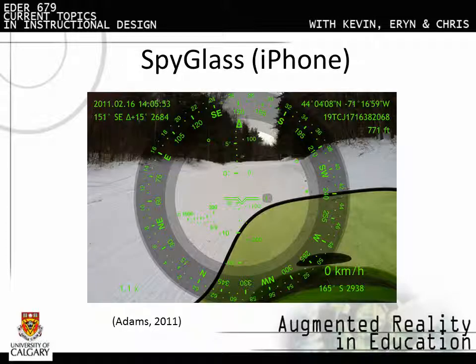The SpyGlass app includes features such as a compass, GPS, and rangefinder, which are displayed against video taken by the camera. It also tracks the position of the sun, moon, and stars.